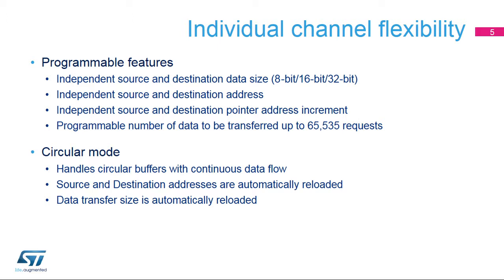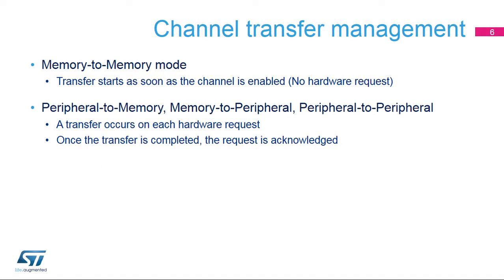Circular buffer mode is available to support a continuous flow of data. The source and destination addresses and the number of data to be transferred are automatically reloaded after the complete transfer. Memory-to-memory mode allows transfers from one address location to another without a hardware request.